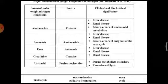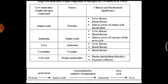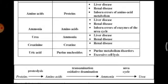Urea, creatinine, and uric acid are the important non-protein nitrogenous substances — they contain nitrogen but are not proteins. Proteins and amino acids undergo transamination and deamination to produce ammonia, and that ammonia is converted to urea in the urea cycle. Thus, urea is the non-protein nitrogenous end product.